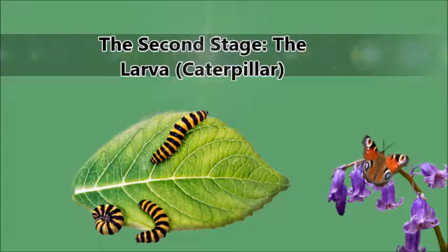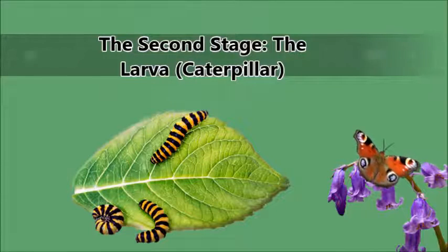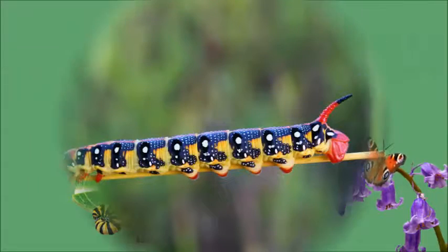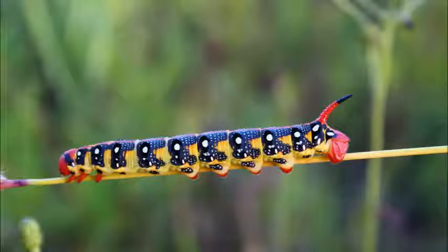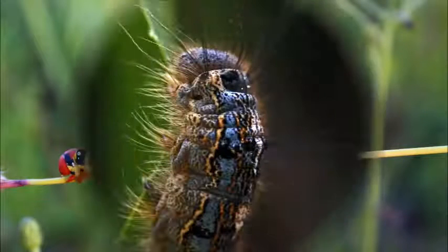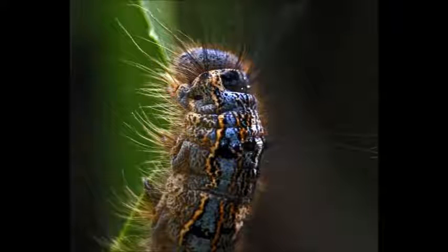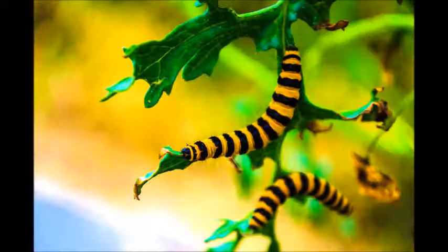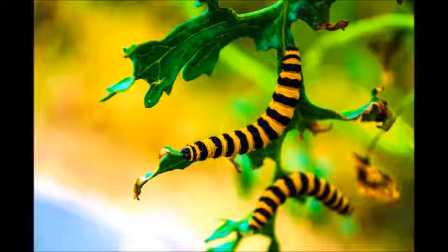The second stage: the larva, or caterpillar. The next stage is the larva, also called a caterpillar if the insect is a butterfly or a moth. When the egg hatches, the caterpillar will start to eat the leaf they were born onto. Each caterpillar type likes only certain types of leaves. Since they are tiny and cannot travel to a new plant, the caterpillar needs to hatch on the kind of leaf it wants to eat. A caterpillar's exoskeleton can't stretch or grow, so the caterpillar sheds its skin, or molts, four or more times as it grows.